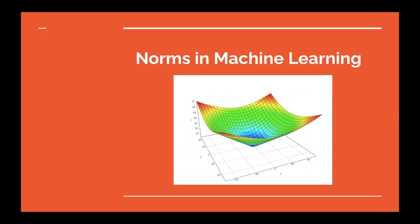So what exactly is a norm in machine learning? Basically, it is a function that maps a vector to a positive value. We can use different functions to calculate this length of a vector. In this tutorial, we are going to discover different ways to calculate vector lengths or magnitudes, called the vector norms.